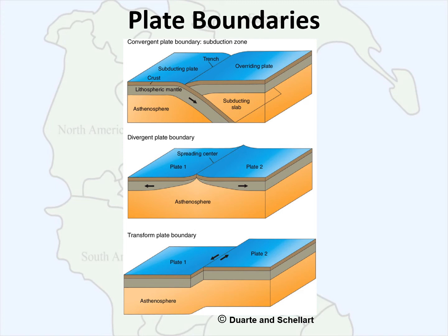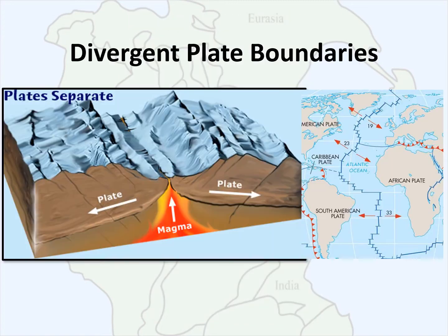Finally, along a transform plate boundary, two sections of tectonic plates are not colliding with each other and not pulling away — they're moving past one another. In some cases this motion is prone to sticking because of the frictional energy between the plates. Depending on the material, the crust, and the length of the boundary, this has an effect on that type of motion. So again we have convergence, divergence, and transform boundary motion.